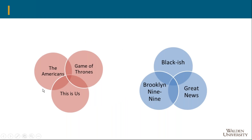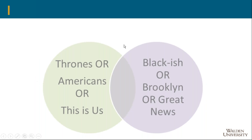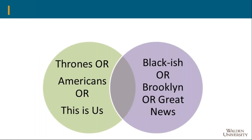Let's look at one more example of how OR works and how you can get more. If I'm looking at people who watch any of these three dramas — The Americans, Game of Thrones, or This Is Us — I would get everybody in all three circles. Likewise with comedies, I could put those together and look at people who watch Game of Thrones OR The Americans OR This Is Us AND Black-ish OR Brooklyn OR Great News. I'd get just that little bit of overlap, but I'm giving it a lot more combinations to work with to give me a results list.